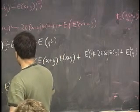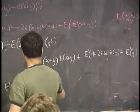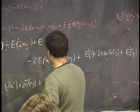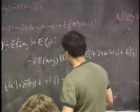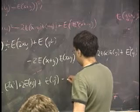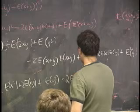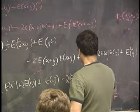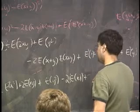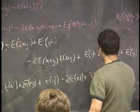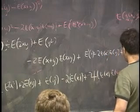So it's the expected value of x squared, plus 2 times the expected value of x times y, plus the expected value of y squared, minus 2 times the expected value of x plus y — which is the expected value of x squared plus 2 times the expected value of x times the expected value of y squared.